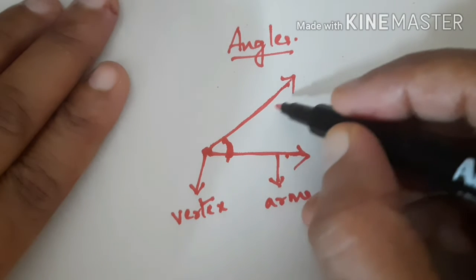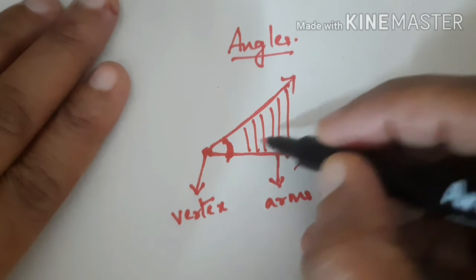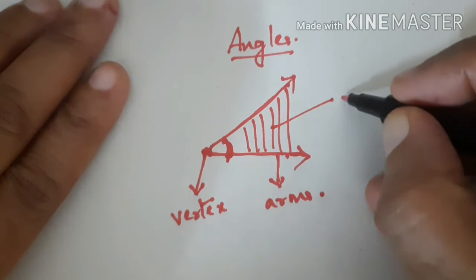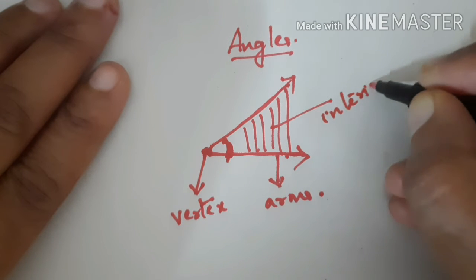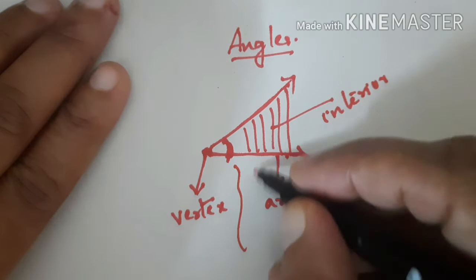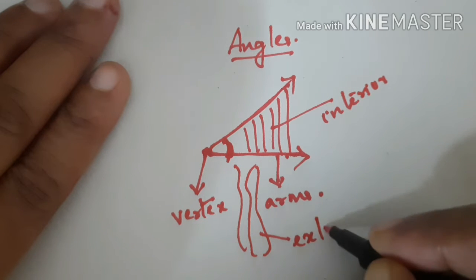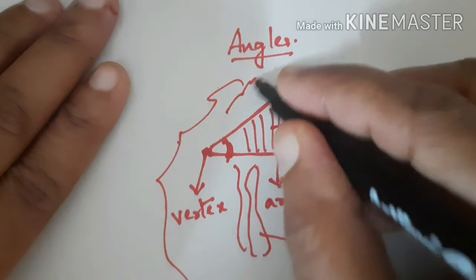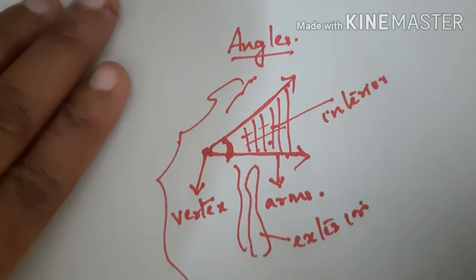Now this portion, that is the inside portion — what do you call it? You studied this in the previous class. It is the interior of the angle. The inside portion is the interior, and the outside portion will be the exterior. All outer portions are the exterior of the angle, and the inside is the interior of the angle.